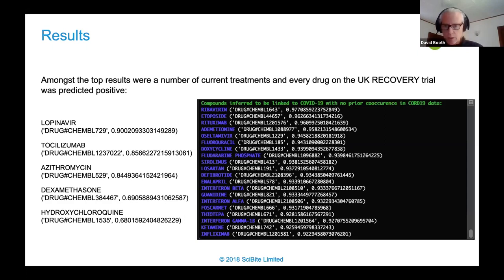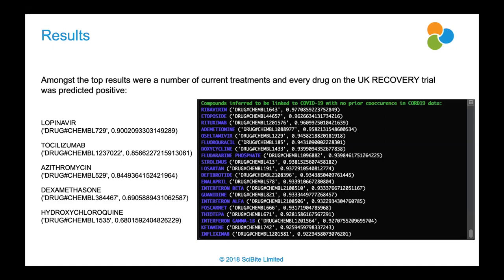Gollam asked whether the Python Termite toolkit can produce the same JSON output shown in the presentation for the COVID-19 dataset. Unfortunately, the toolkit requires access to a Termite server, and Termite is commercial software so there is no public server. However, the annotated dataset itself is free to download.